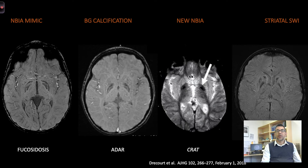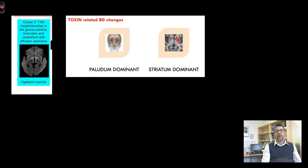Newer disorders that have monogenic associations can also mimic NBIA disorders. A very unique pattern was noted in children who had basal ganglia, particularly pallidal diffusion restriction, along with changes on T2-weighted imaging and diffusion imaging in the brainstem and the cerebellum, and these children had vigabatrin toxicity.